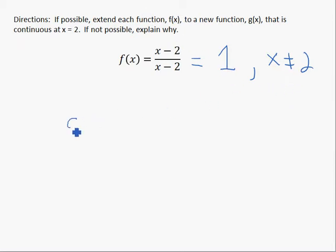So I'm going to create g of x, which is going to equal f of x everywhere. So it's going to equal 1 everywhere except for 2. So it's the same exact thing as f of x.